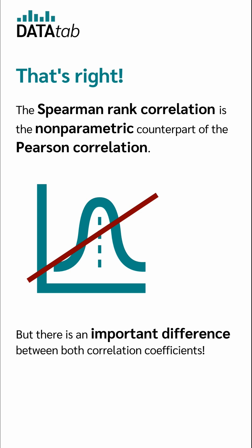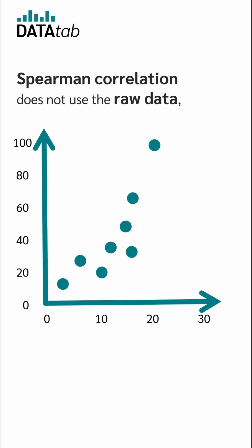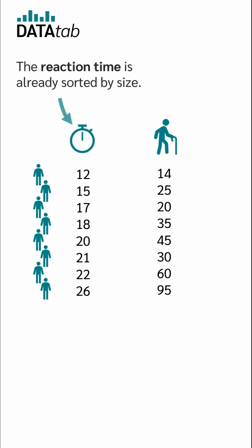But there is an important difference between both correlation coefficients. Spearman correlation does not use the raw data, but the ranks of the data. Let's look at this with an example. We measure the reaction time of 8 computer players and ask their age.